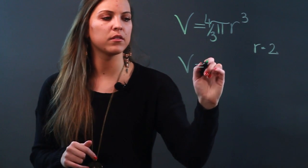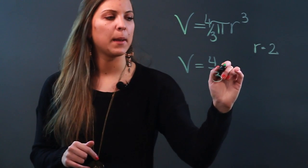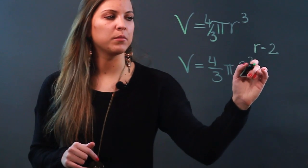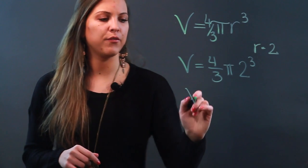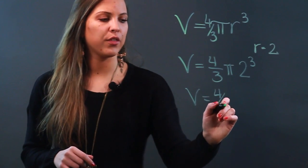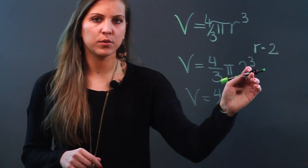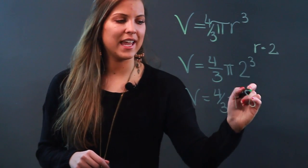We would have volume equals 4/3 pi 2 cubed. Now we're just going to simplify, so we have v equals 4/3 pi, and 2 cubed means 2 times 2 times 2, so that's 8.